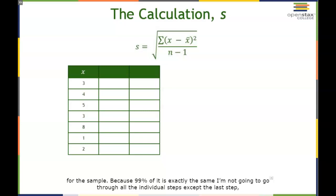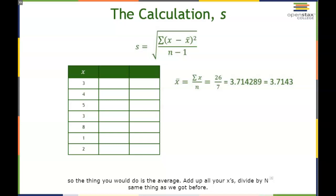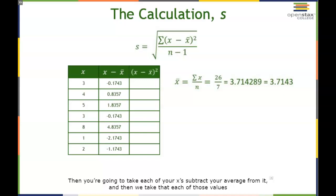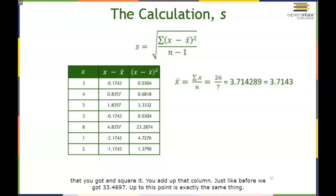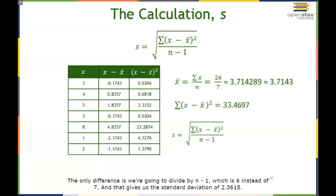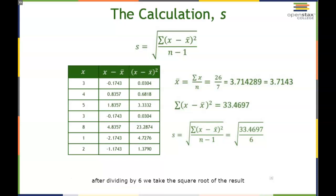Since it's 99% the same, I won't repeat all individual steps. You calculate the average, subtract it from each X, square each result, and add up that column — just like before, we get 33.4697. The only difference is we divide by N minus 1, which is 6 instead of 7. After dividing by 6 and taking the square root, we get a sample standard deviation of 2.3618.